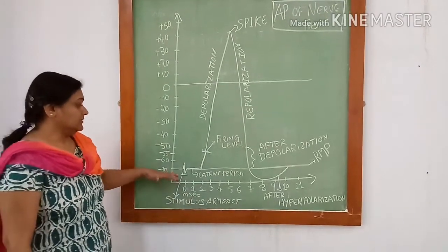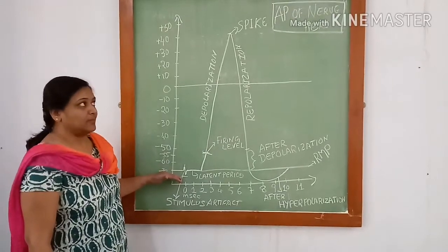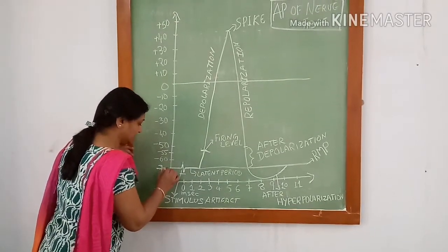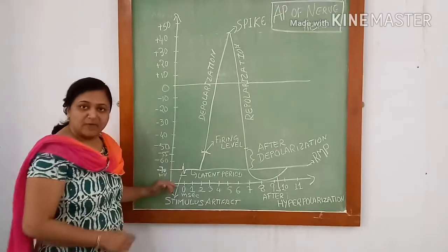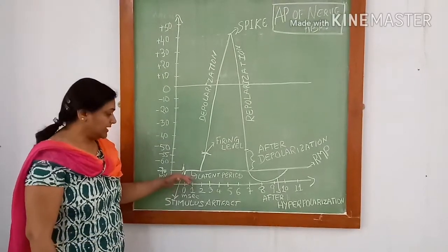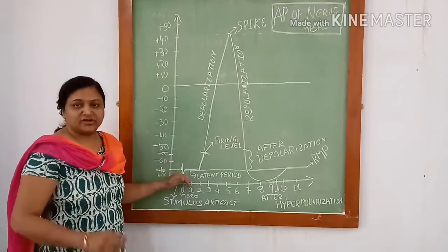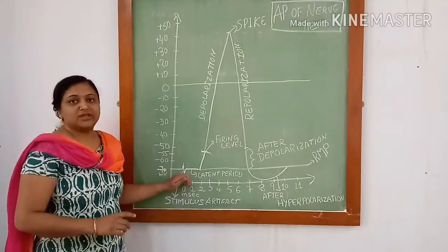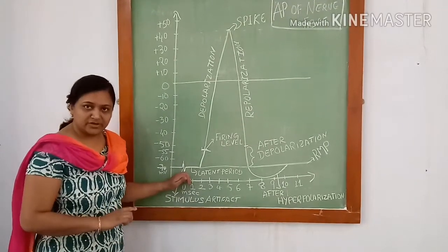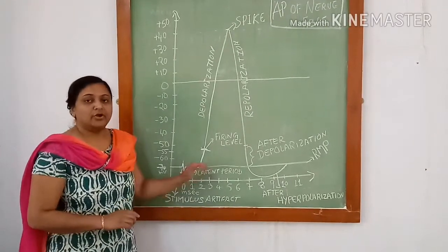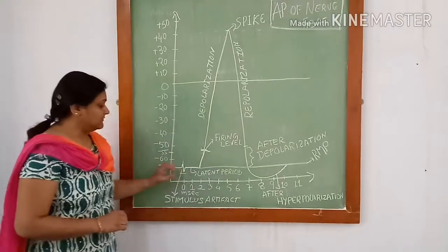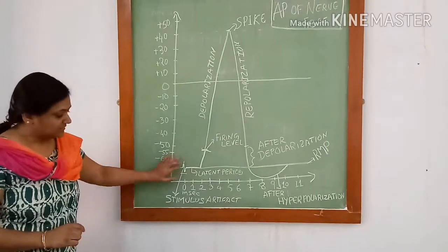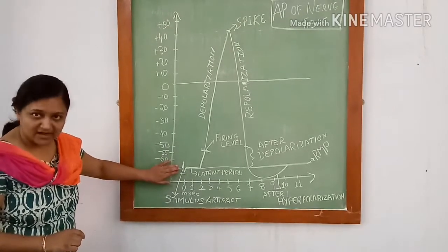For the nerve fiber, the resting membrane potential is minus 70 mV. When we apply a stimulating electrode, it leads to certain changes in the membrane. Due to leakage of current from the stimulating electrode to the recording electrode, a deflection is recorded on the graph. This is known as stimulus artifact.